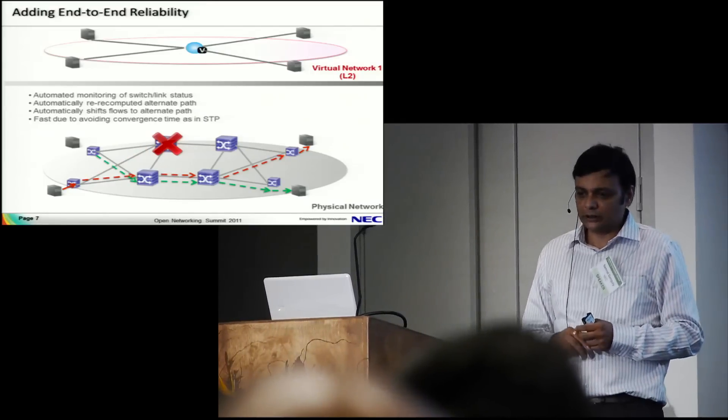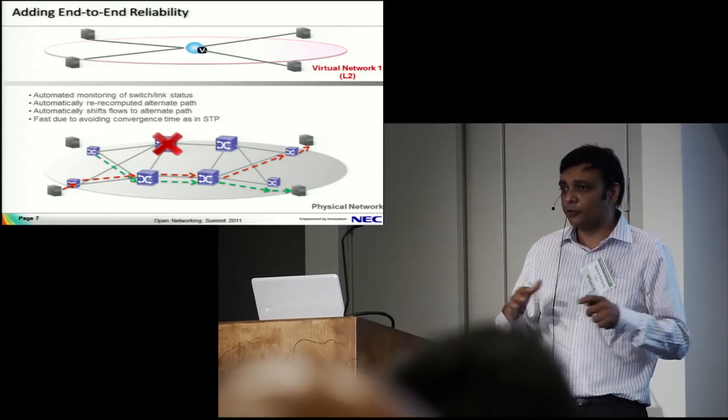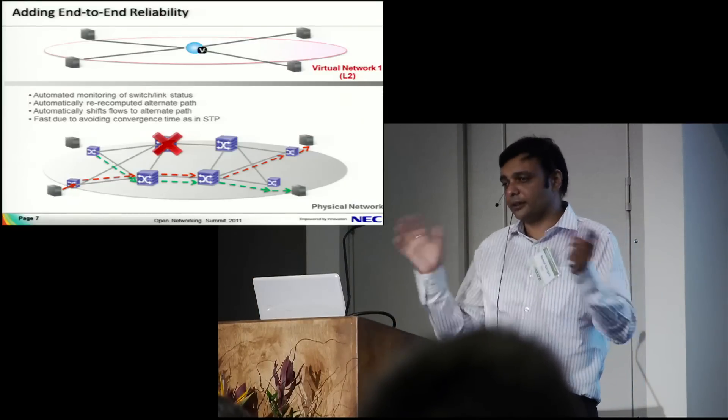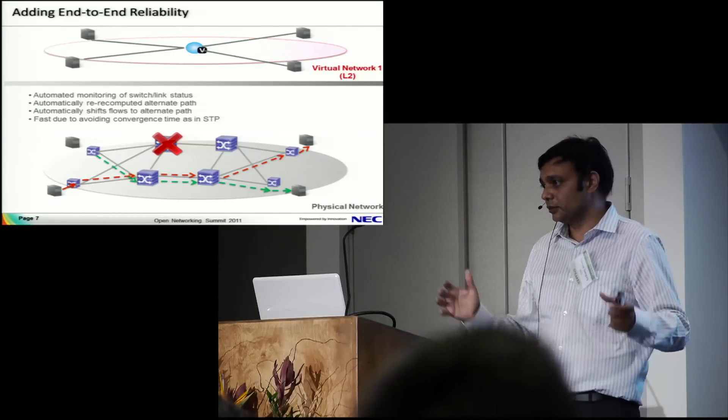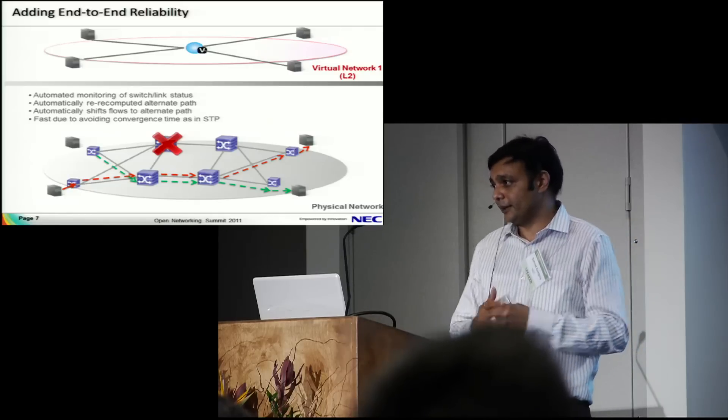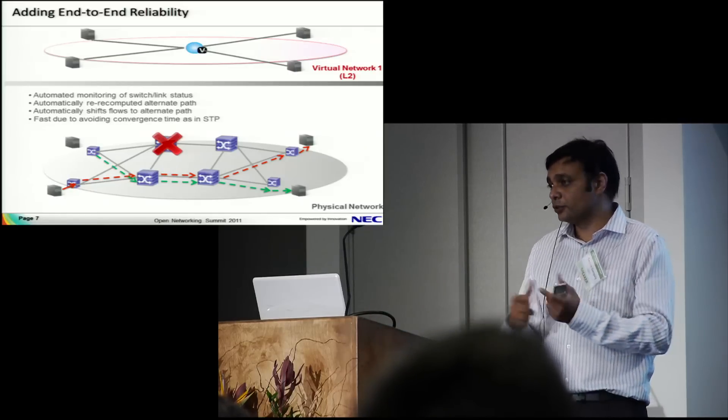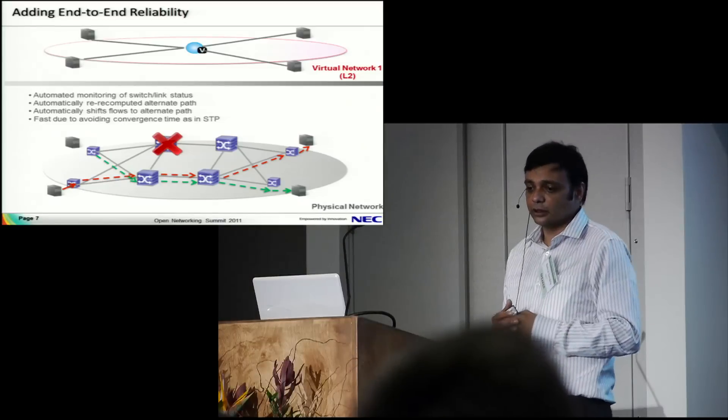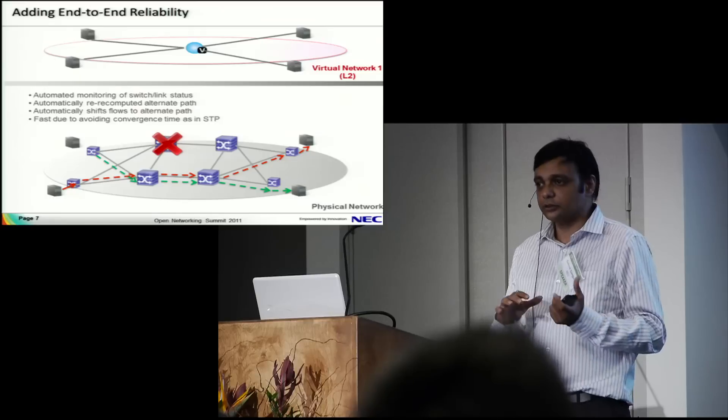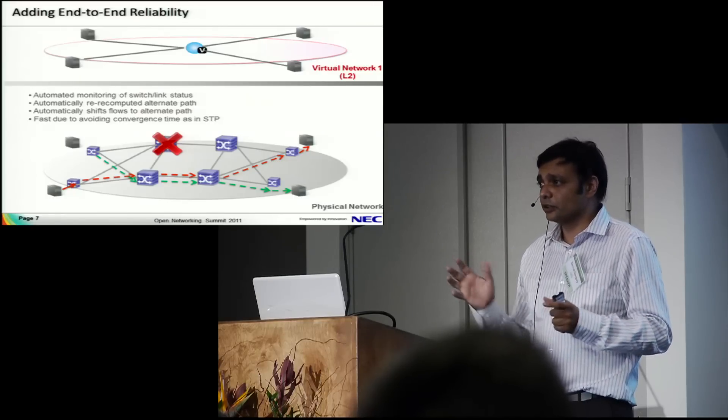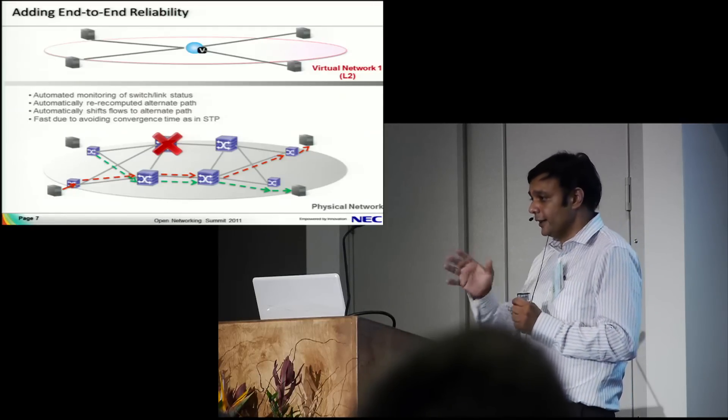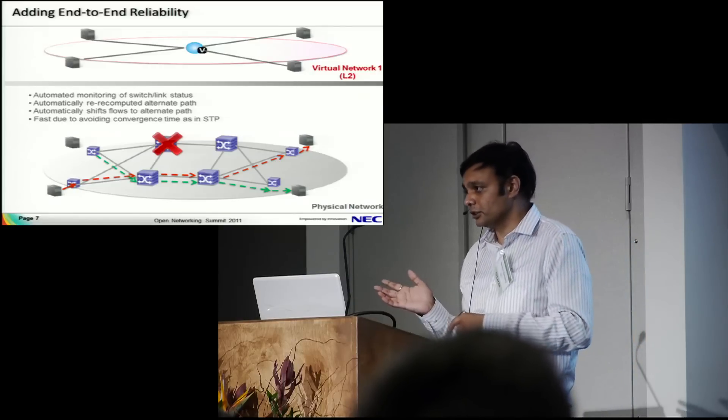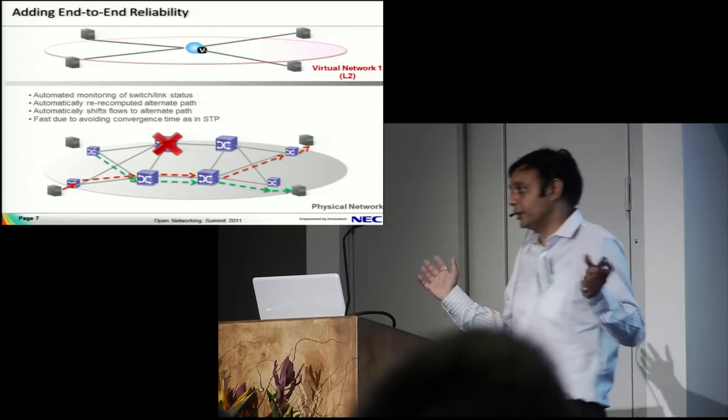There's the reliability part. You can provide end-to-end reliability where if any link or switch dies in the entire network, you can detect it and compute the path at the end-to-end level. You can do that fast because there's no convergence like you see in distributed protocols. We see around 200 to 400 milliseconds to detect, create an end-to-end path, switch flows to the new path, and get the system running.